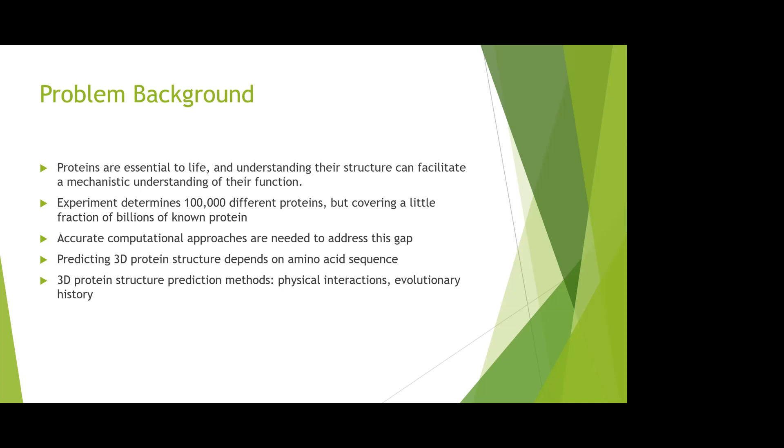We need accurate computational approaches to address this gap between the known structures from experiments and the unknown structures. Predicting this three-dimensional protein structure depends only on the amino acid sequence. There are two kinds of methods to predict 3D protein structure previously: physical interactions and evolutionary history.